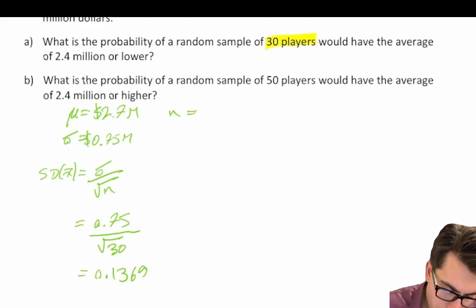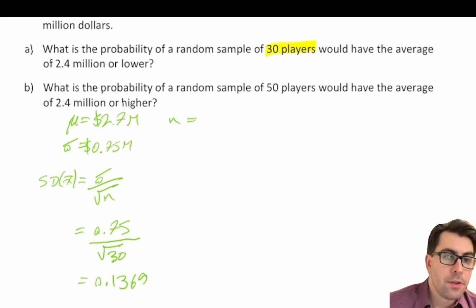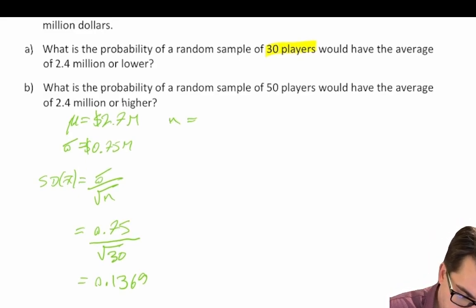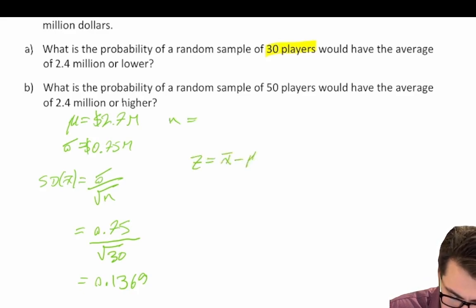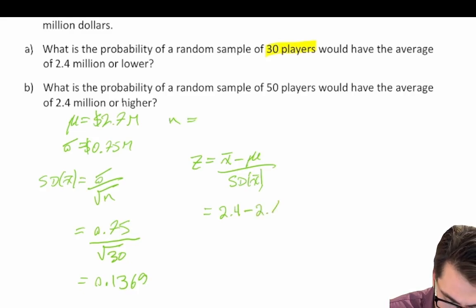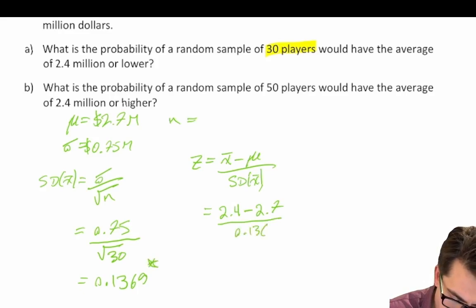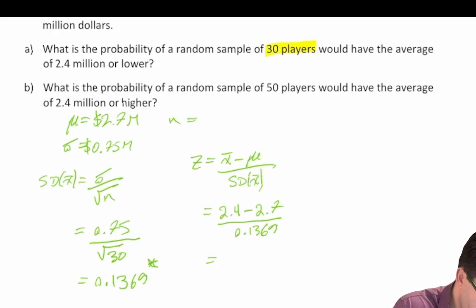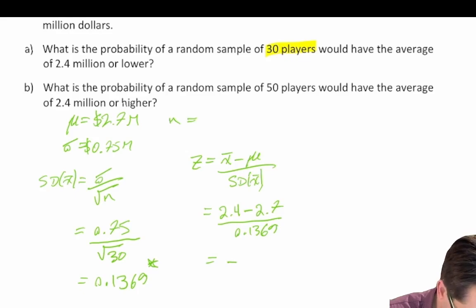We assume a normal distribution and calculate the z-score. Z equals the sample mean minus the population mean divided by the standard deviation of x-bar. That is 2.4 million minus 2.7 million divided by 0.1369. So 2.4 minus 2.7 divided by 0.1369 gives us a z-score of negative 2.19.